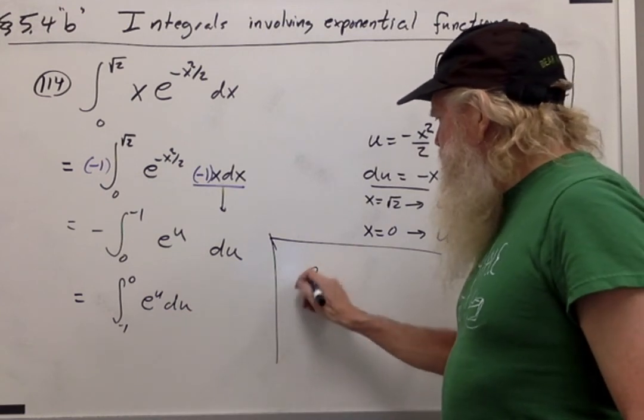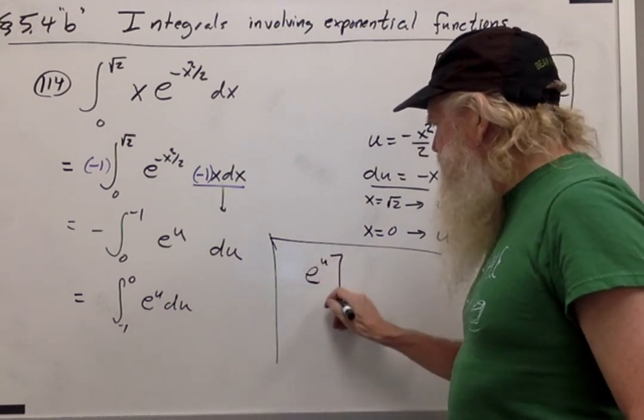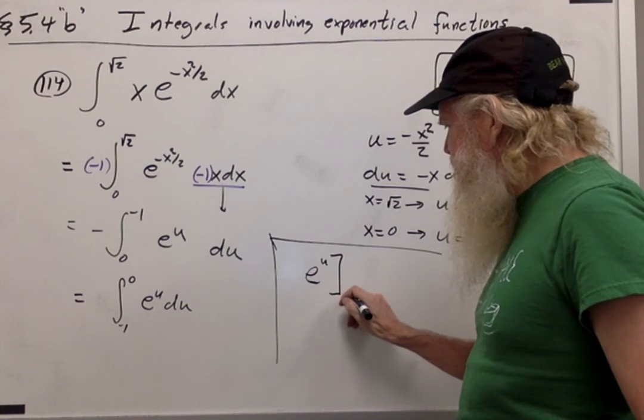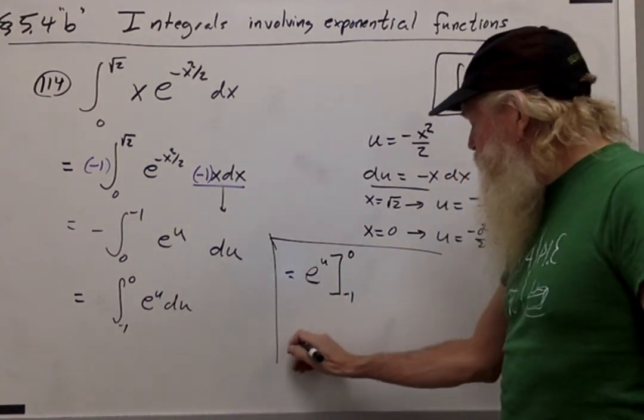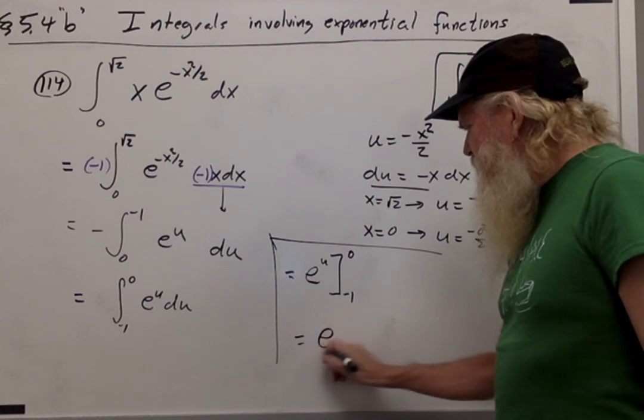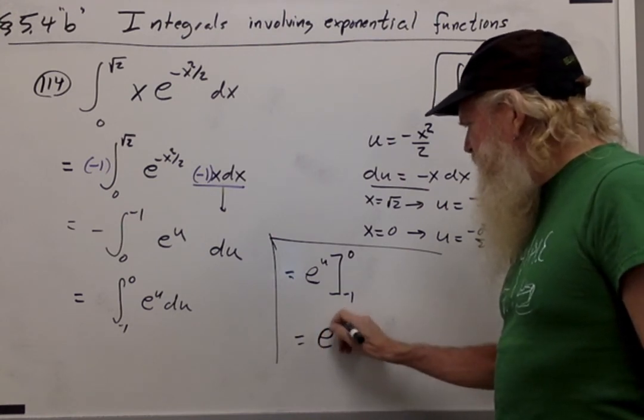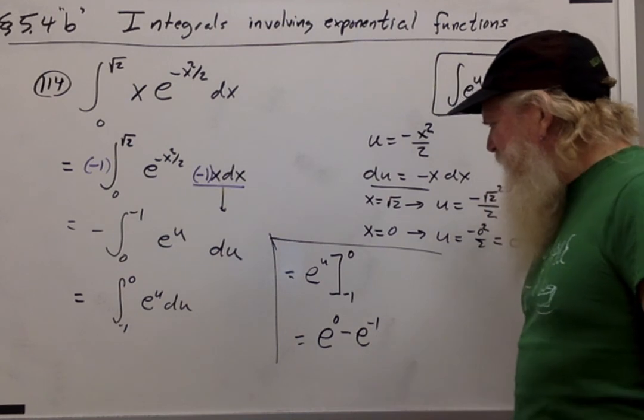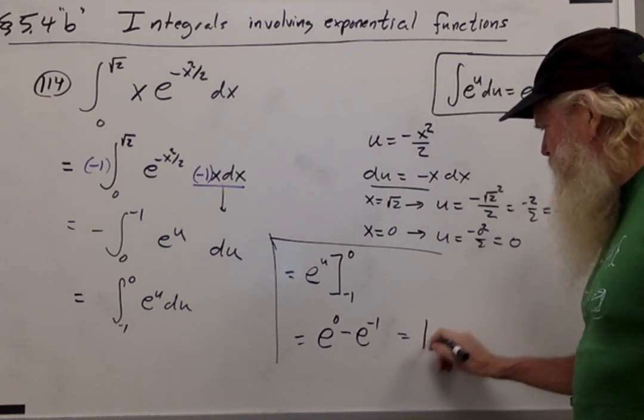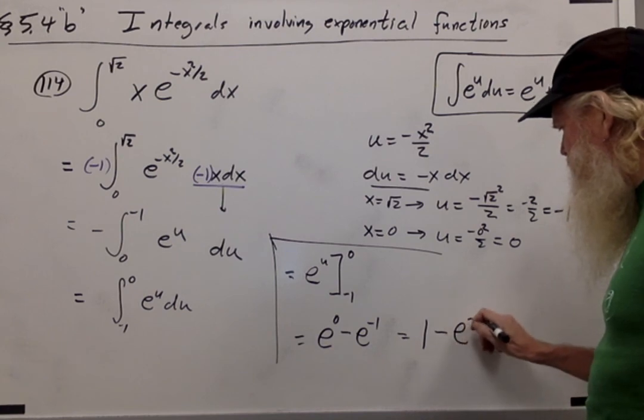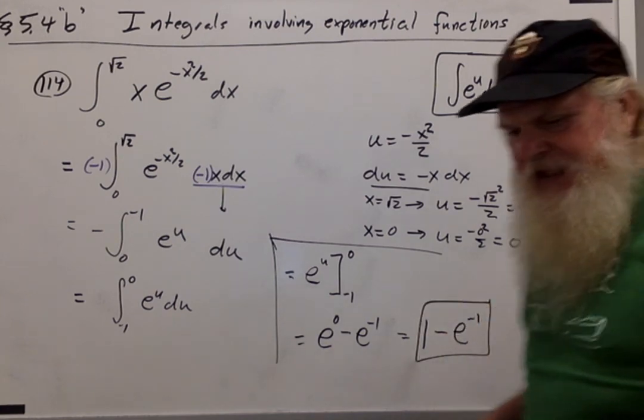The integral of e to the u is e to the u. Since it's a definite integral, I don't need the plus c. And that's taken from negative 1 to 0, which will give me e to the 0 minus e to the negative 1. But remember that e to the 0 is 1, so I get 1 minus e to the negative 1.